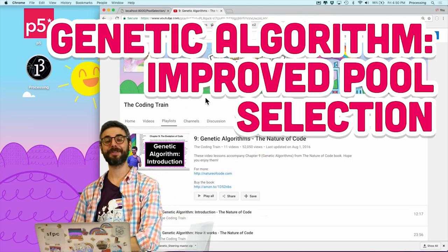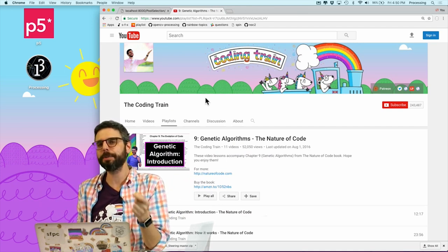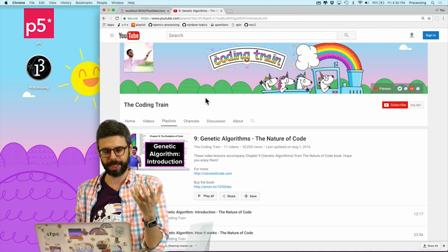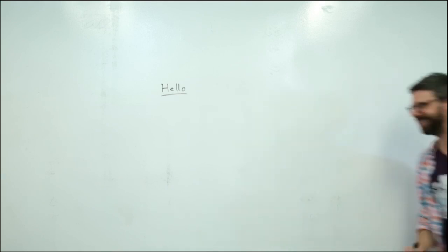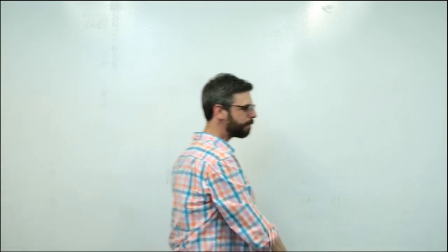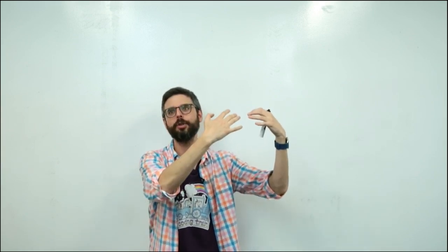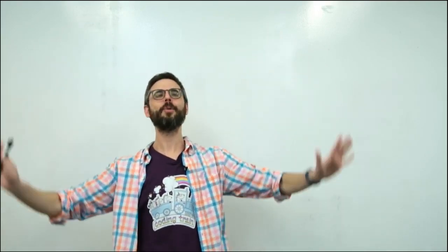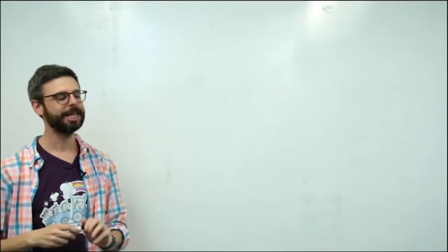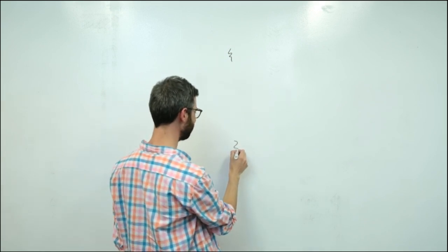Hello, I'm back for another genetic algorithms video, although this video is not just about genetic algorithms. This video is ultimately about picking from a list of things randomly, but picking some things more often than other things. This is something you have to do with a genetic algorithm, but let's erase our minds of genetic algorithms and start with a very simple scenario. I'm going to create a JavaScript object.